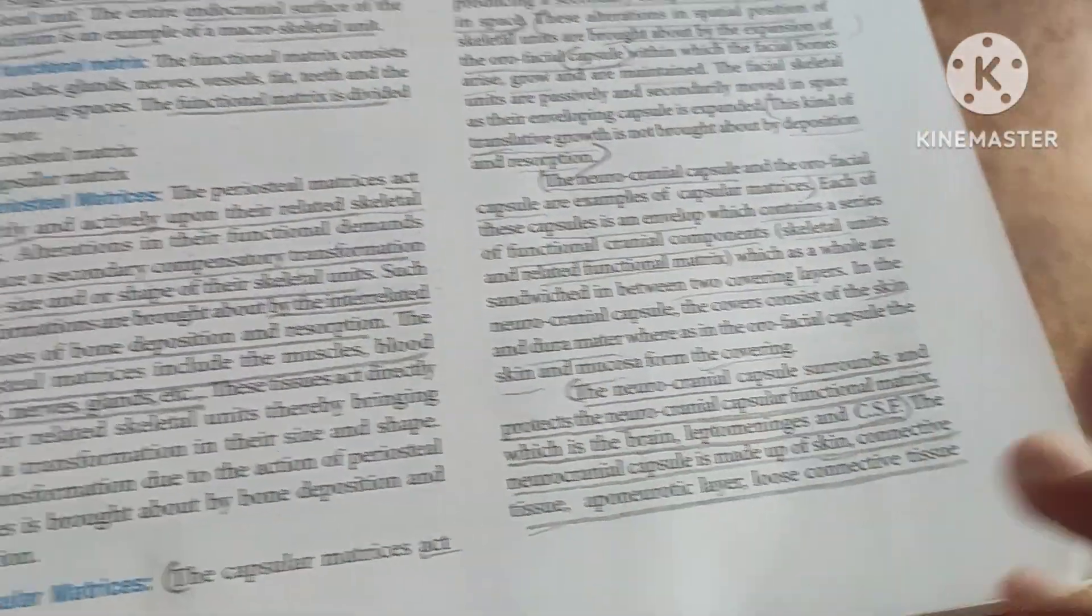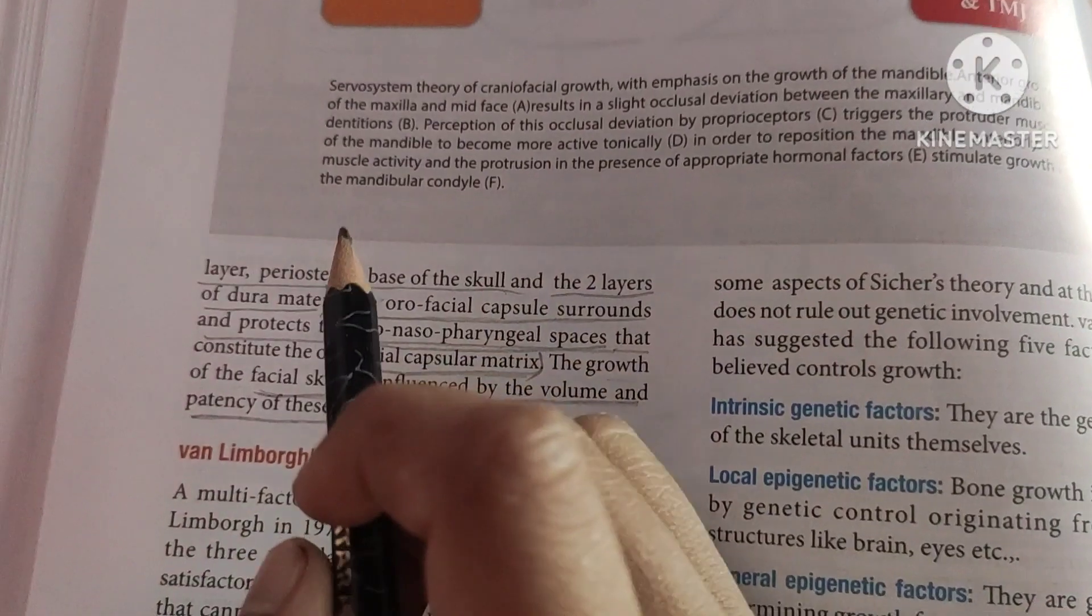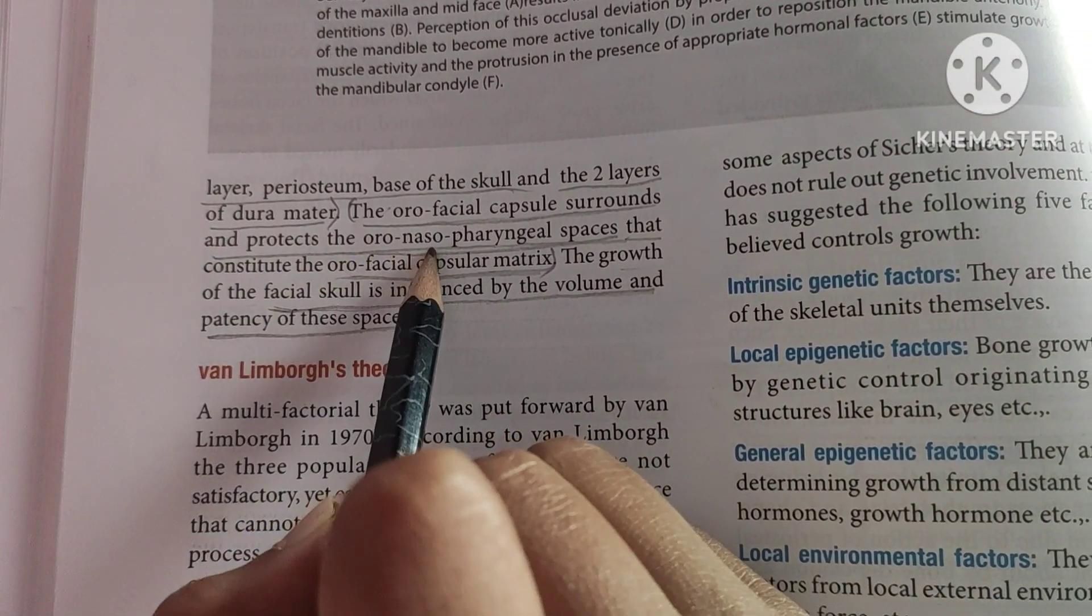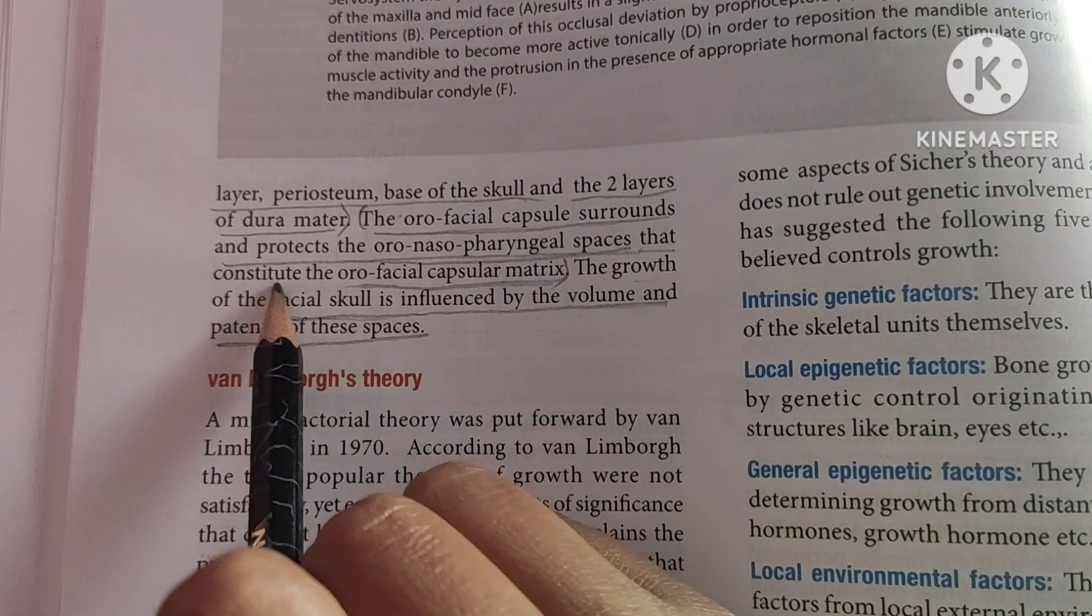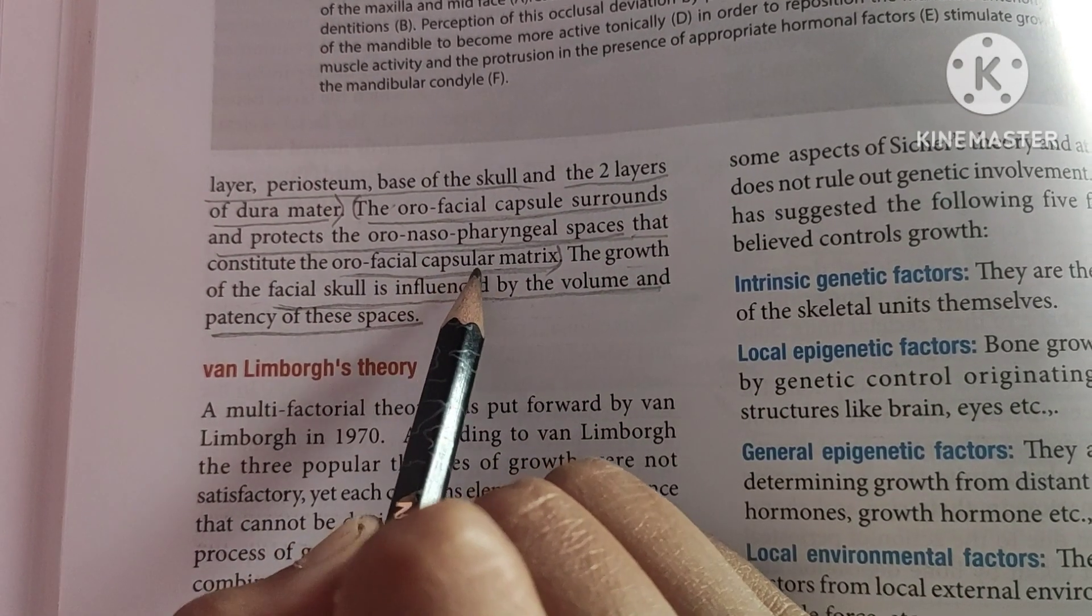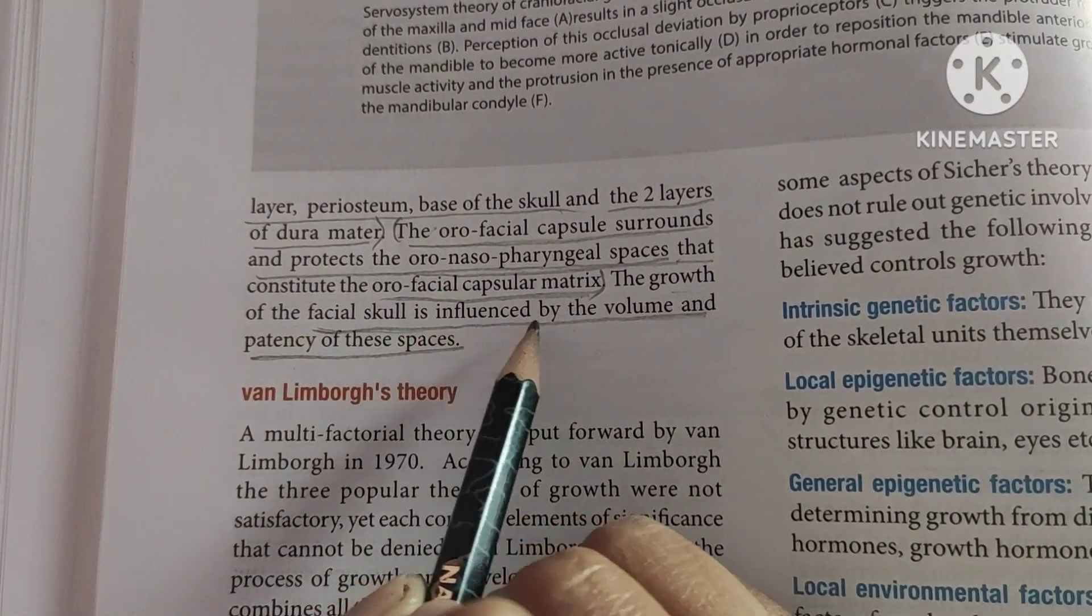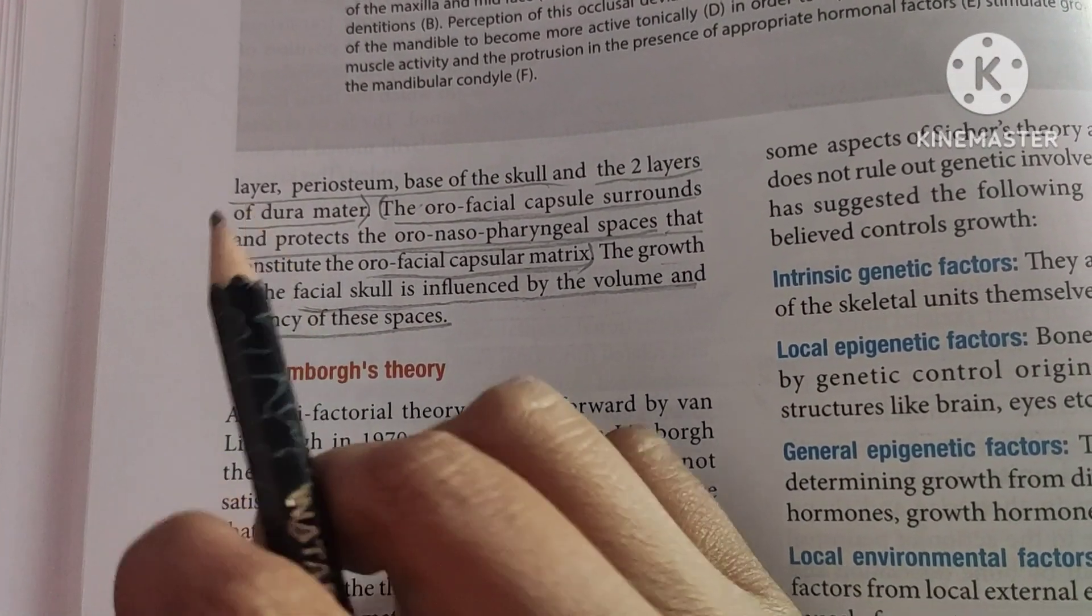The orofacial capsule surrounds and protects the oro-nasopharyngeal spaces that constitute the orofacial capsular matrix. The growth of the facial skull is influenced by the volume and patency of this.